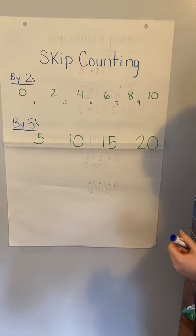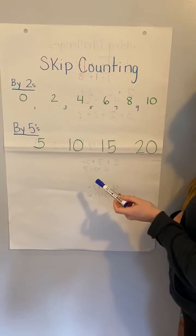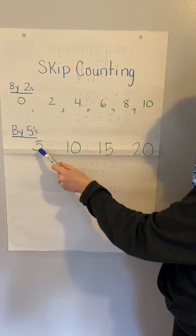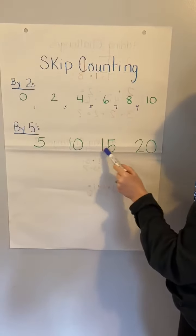Do you notice a pattern in all these numbers? I'll show you. All of the numbers end in five or zero, five or zero.